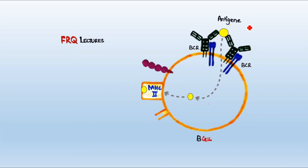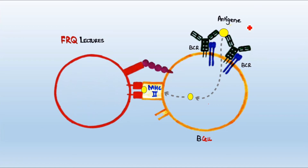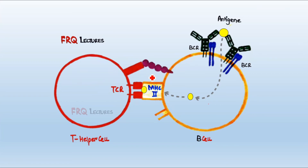In the next phase, a T helper cell approaches the B cell and interacts with the MHC using its TCR. More specifically, this is T helper cell type 2. However, this TCR-MHC interaction alone is not enough — we need co-stimulatory interactions as well to strengthen and confirm the bonding between TCR and MHC, which also has the loaded peptide fragment.